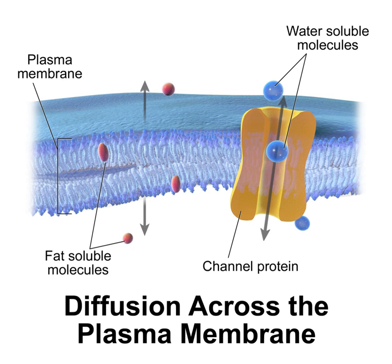The cell membrane surrounds the cytoplasm of living cells, physically separating the intracellular components from the extracellular environment. It also anchors the cytoskeleton to provide shape to the cell and attaches to the extracellular matrix and other cells to form tissues. Fungi, bacteria, most archaea, and plants also have a cell wall, which provides mechanical support and precludes the passage of larger molecules. The cell membrane is selectively permeable, regulating what enters and exits the cell. The movement of substances across the membrane can be either passive, occurring without cellular energy, or active, requiring the cell to expend energy. The membrane also maintains the cell potential.